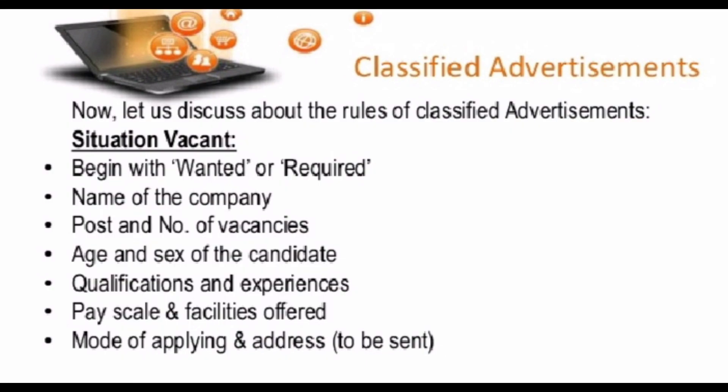Now let's discuss the rules of classified advertisement. For situation vacant, a classified advertisement is written when there is a vacancy — for example, for teachers or any vacancy in shops. Begin with 'Wanted' or 'Required', then mention the name of the company, post and number of vacancies, age and sex of candidate, qualification and experience, pay scale and facilities, mode of applying, and address to send the application.